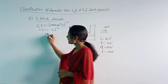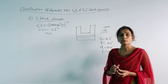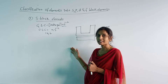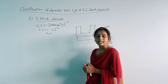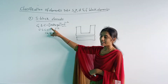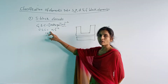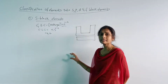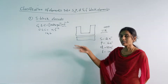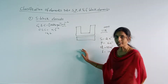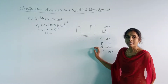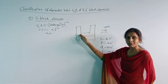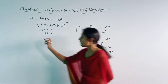The elements of group 1 and group 2 are S block elements. These are mainly alkali metals and alkaline earth metals, and because of that they are highly ionic as well as metallic in nature. The last electron in these elements enters into the S orbital of the valence shell.